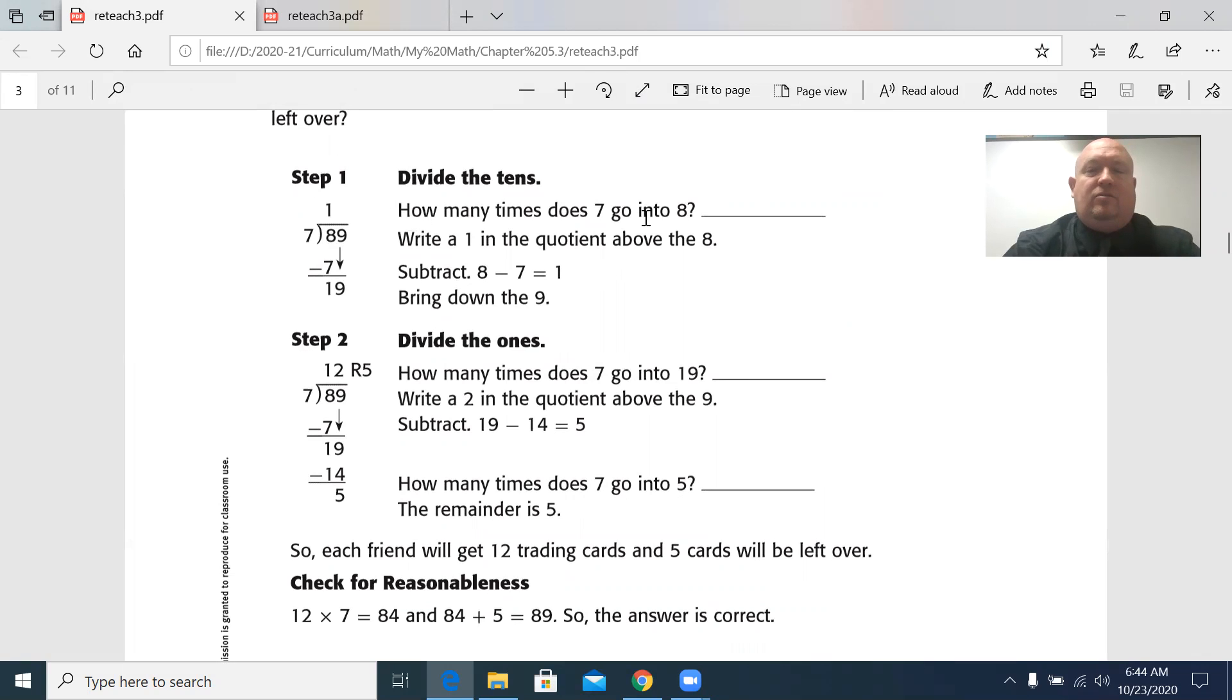Step one, divide the tens. Well, what do they mean by that, Mr. Ireland? If you remember place value with whole numbers, the number on the right was the ones place. The next one is the tens place. Then the hundreds. Then the thousands.